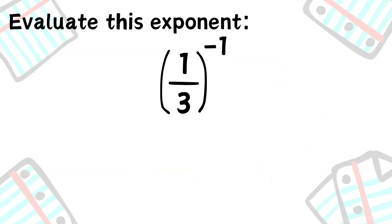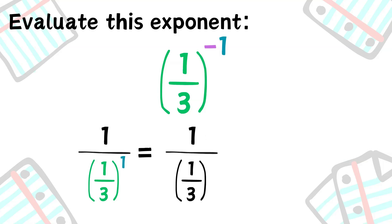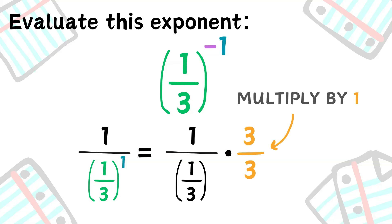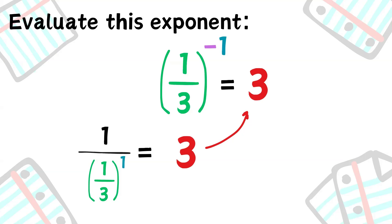Let's do some quick practice on negative exponents. For 2 to the power of negative 3, since we have the negative, we write this as 1 over 2 to the power of 3. 2 to the power of 3 is 8, so this evaluates to 1 over 8. Now, what about 1 third to the power of negative 1? The negative exponent tells us this is 1 over 1 third to the power of 1, which is 1 third. So we have 1 over 1 third, which equals 3.